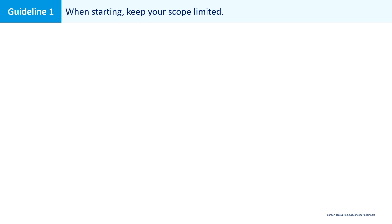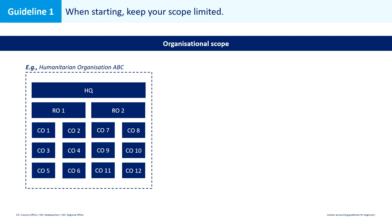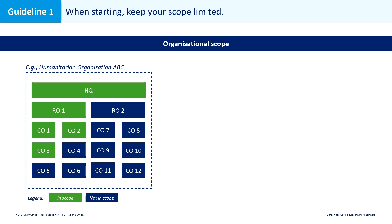There are two main scope dimensions. The first one is the organizational scope. Each organization has its own organizational structure with different entities. For example, organization ABC has one headquarters, two regional offices, and 12 country offices — a total of 15 entities. For its first round of carbon accounting, it decides to limit its organizational scope to just five entities: its headquarters, one regional office, and three country offices. Organization ABC is basically piloting carbon accounting with these five entities, making sure it can build solid processes before extending its scope to the entire organization.